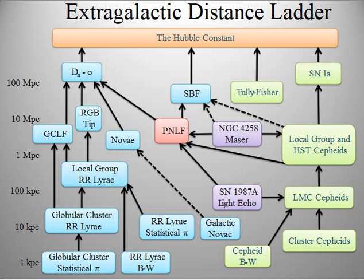For a group of stars with the same spectral class and a similar magnitude range, a mean parallax can be derived from statistical analysis of the proper motions relative to their radial velocities. This statistical parallax method is useful for measuring the distances of bright stars beyond 50 parsecs and giant variable stars, including Cepheids and the RR Lyrae variables.